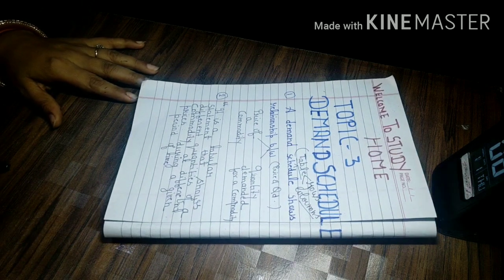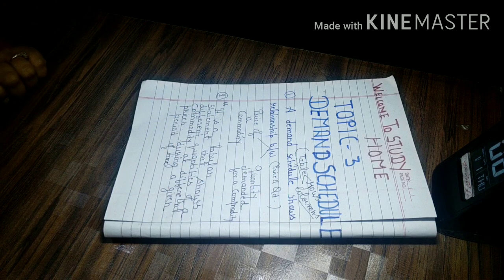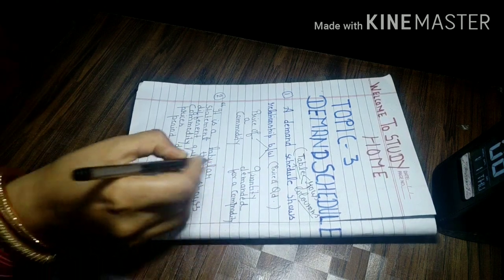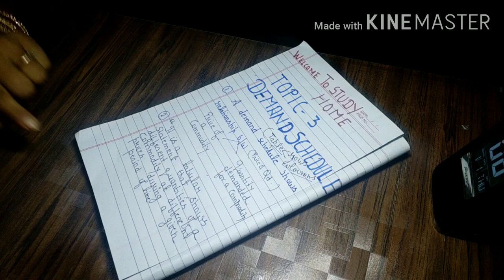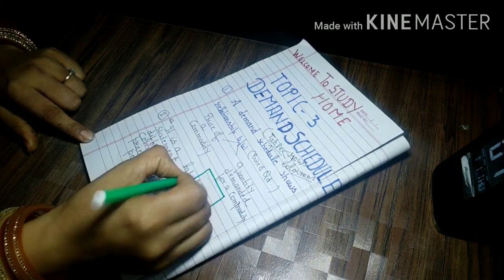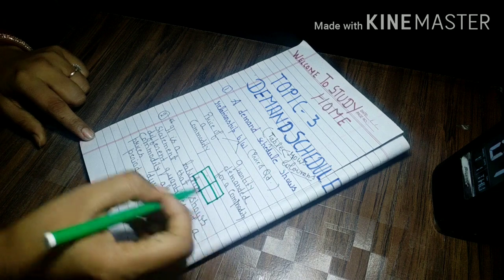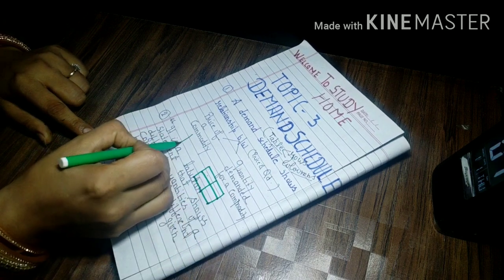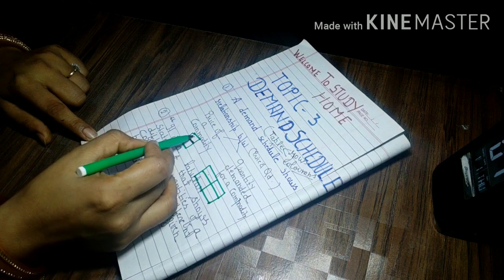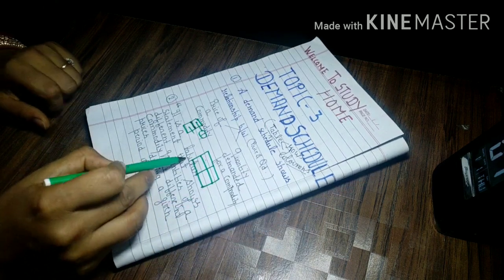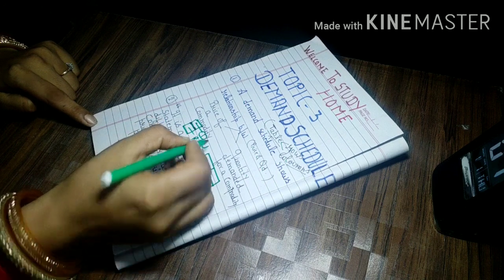And the second most important thing about Demand Schedule is it is a tabular statement. Any tabular statement is like in this way. This tabular statement is like in this way. Means it contains rows and columns. So these are the rows. And if we divide it from mid then it is one single column. So tabular statement means a presentation with the help of rows and columns.